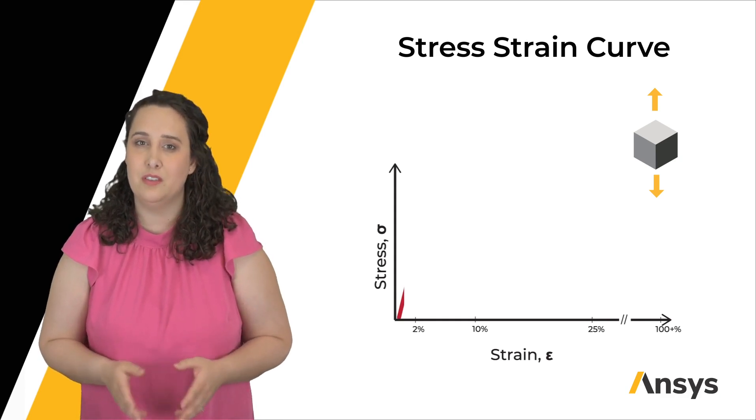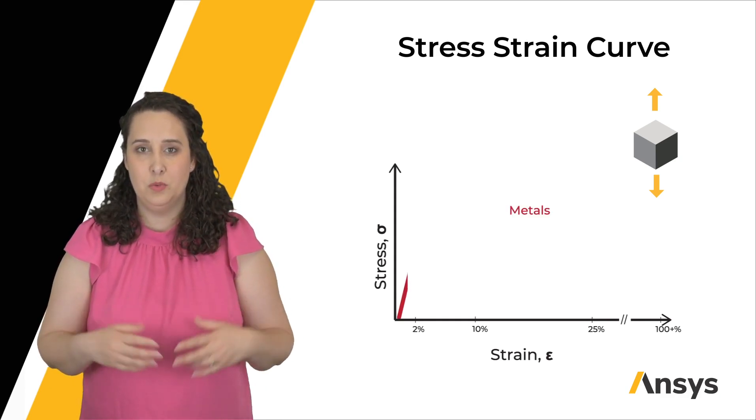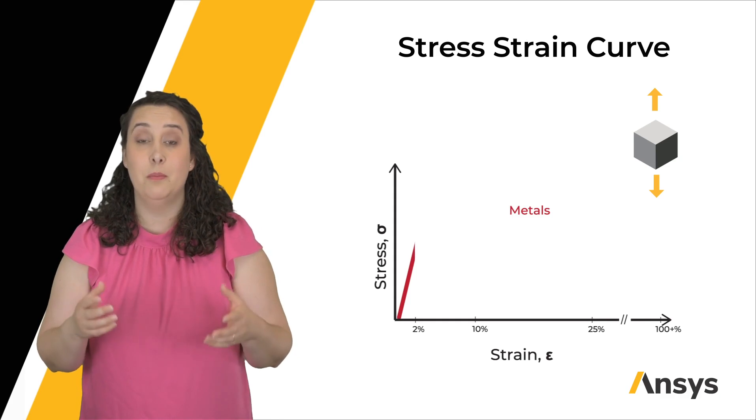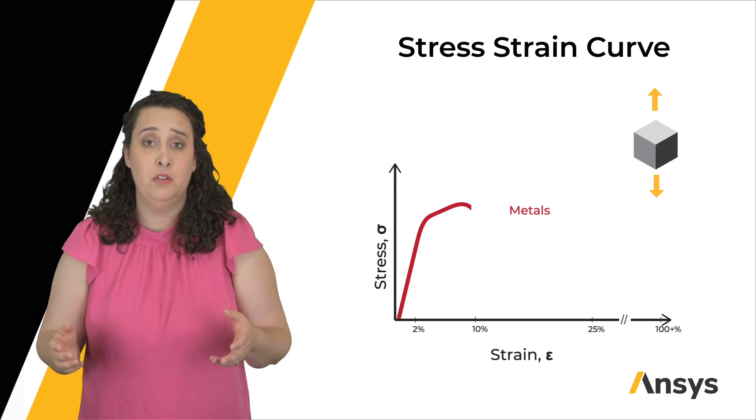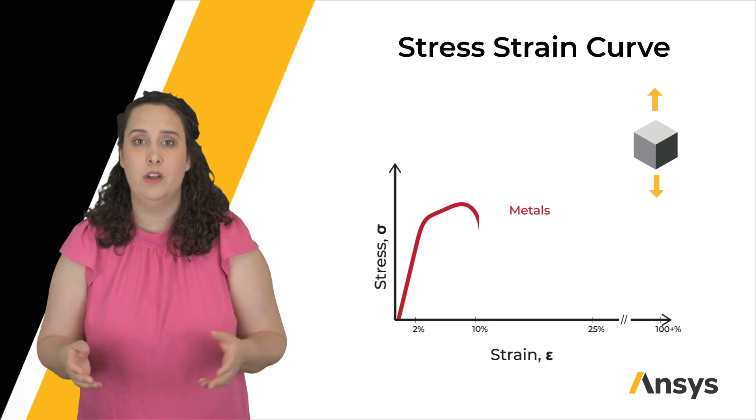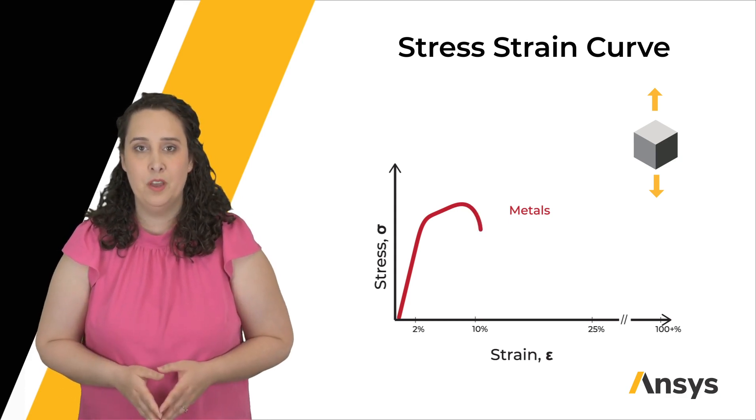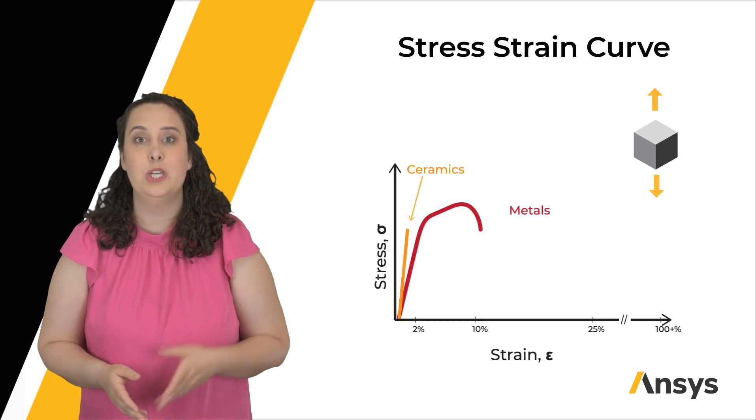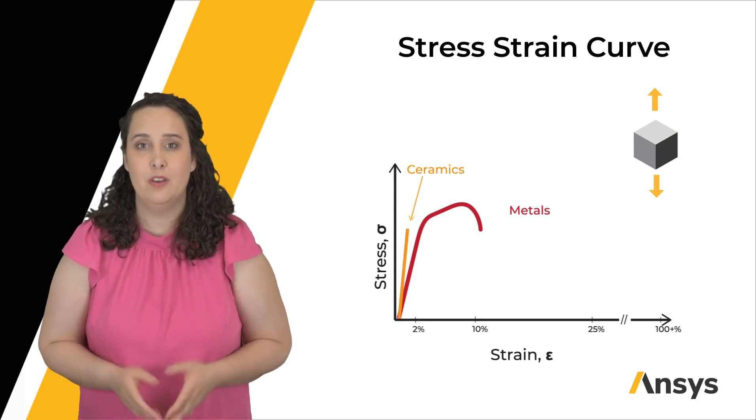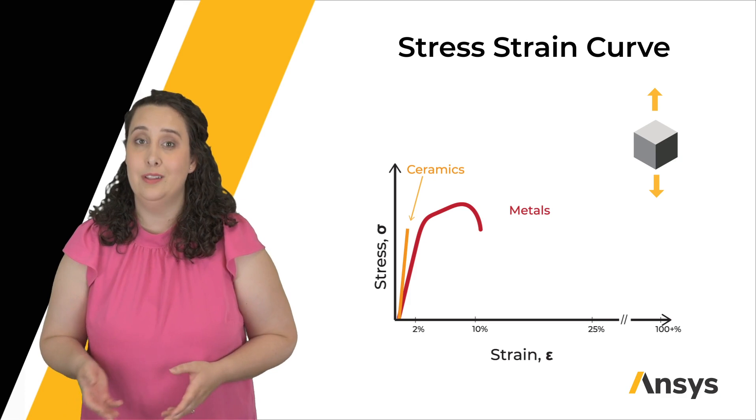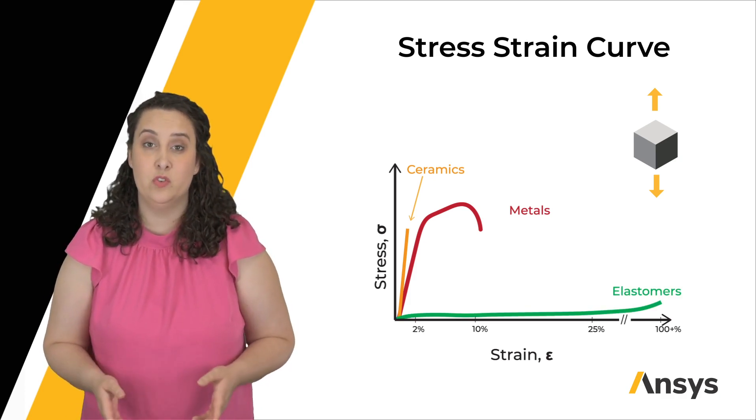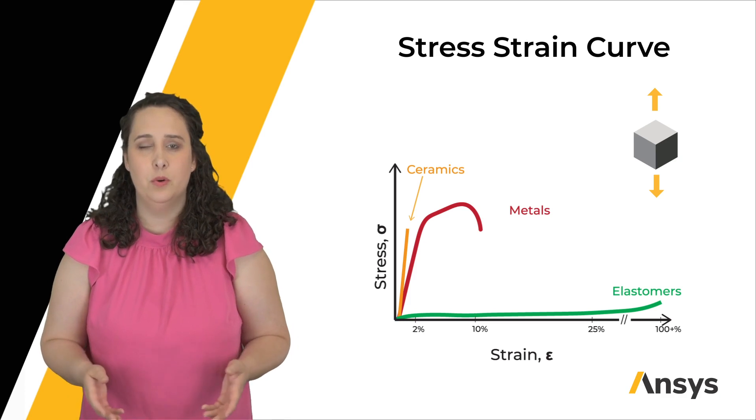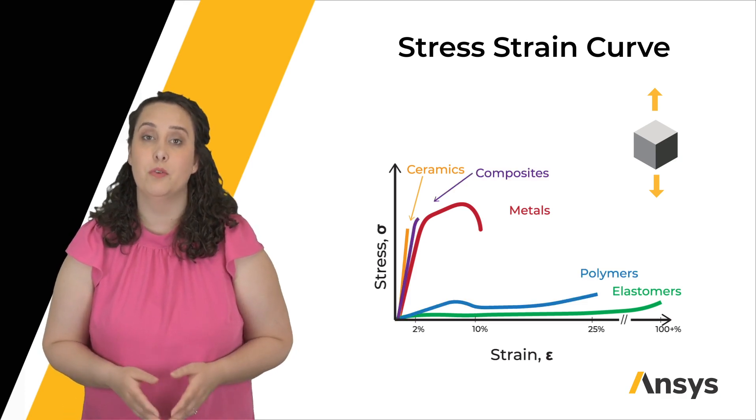Metals are often used as a case example. We see that there is some linear relationship between stress and strain at low strains. We enter some non-linear region with a peak, and finally have material failure. Ceramics, on the other hand, reach higher stresses at lower strains, and then fail. While elastomers have generally a non-linear relationship between stress and strain, and can reach strains upwards of 100% or more before failure.